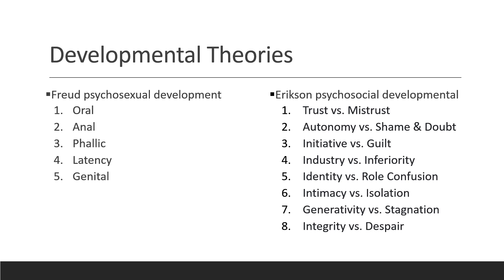The oral stage begins at birth until 18 months. At this stage, the mouth is the focus of gratification and pleasure. The anal stage begins at 18 months and lasts to around 3 years, where the individual finds gratification in bowel and bladder control. The phallic stage is ages 3 to 6 years. This is where the young child will become aware of their body and may enjoy self-masturbation, undressing, and walking around naked — typical behaviors for this age group.